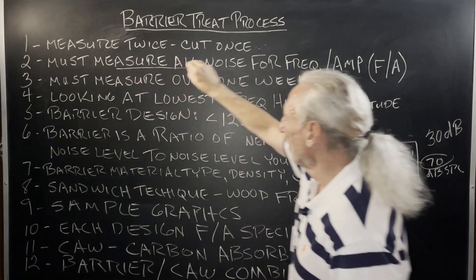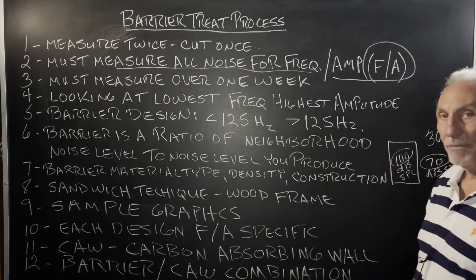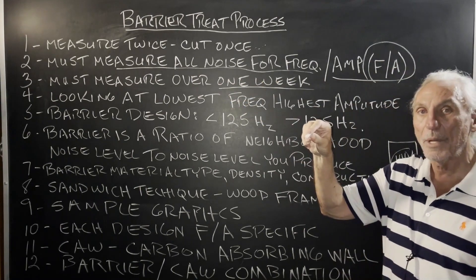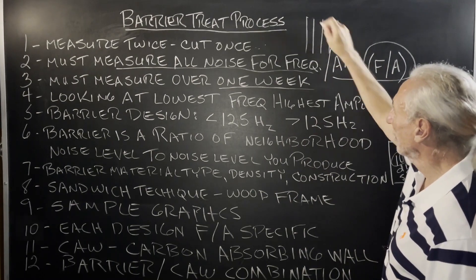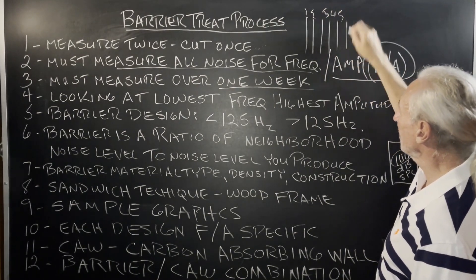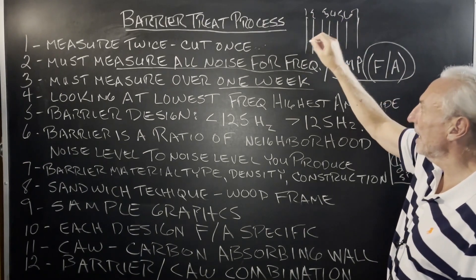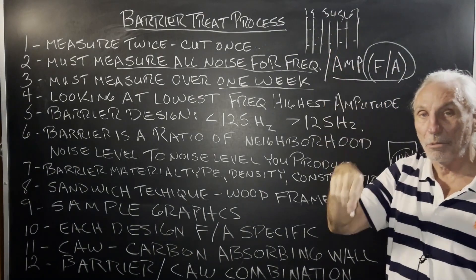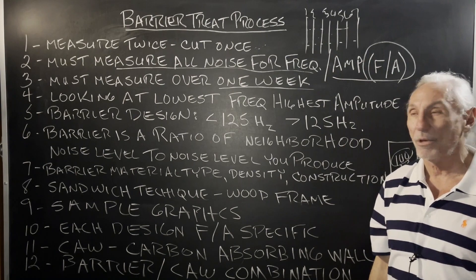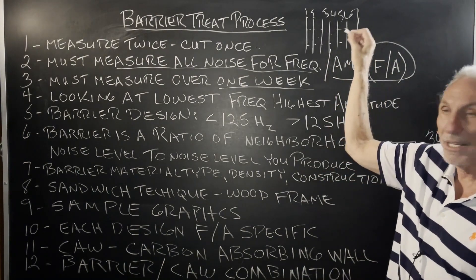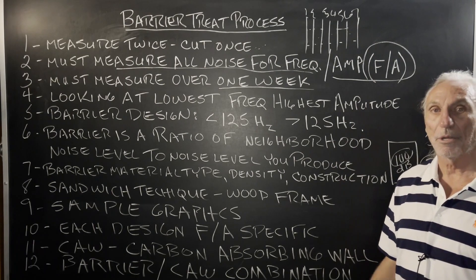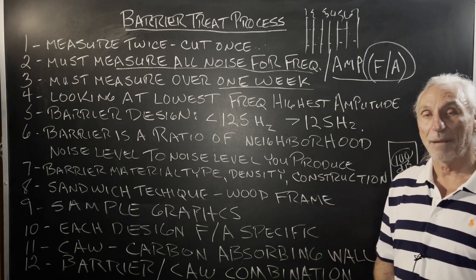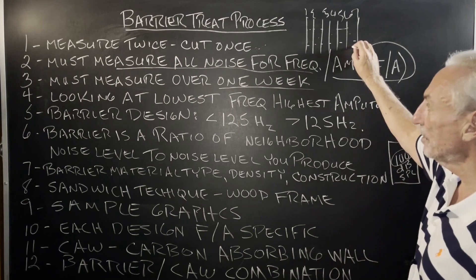We must measure for all noise — frequency and amplitude. We've got to do it over a week, because we want to see what's going on across the whole week. We want a seven-day picture of what's going on each day, so we can look at each day and the time of day. We need the largest amplitude and the lowest frequency, because that's the combination we have to design for. That's why we need seven days of data — we're looking for that specific relationship.